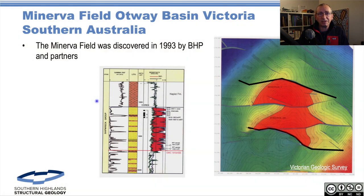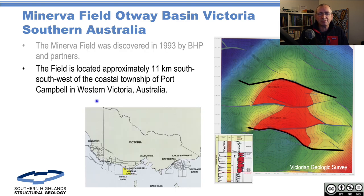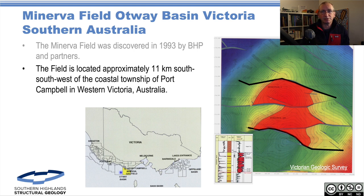It was discovered in 1993 by BHP and its partners — a nice gas column with about 300 bcf of gas, two discovery wells. It's about 11km offshore southwest of Port Campbell, with Melbourne in here, so a useful gas resource.